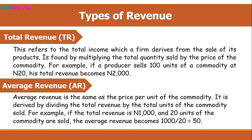Total revenue refers to the total income which a firm derives from the sale of its products. It is found by multiplying the total quantity sold by the price of the commodity. For example, if a producer sells 100 units of a commodity at 20 naira, the total revenue becomes 2000 naira — that is, 100 units multiplied by 20 naira.